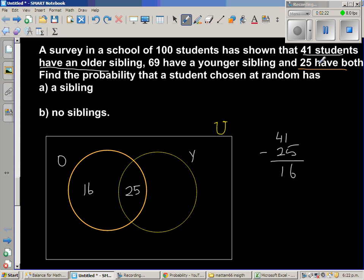And 69 have younger siblings. So this total area, the yellow circle comprises, should have 69. So you have already included 25. So I should go 69 minus 25, which is 44. So I should write 44 here.